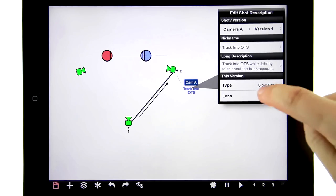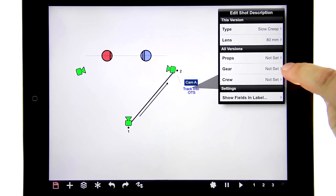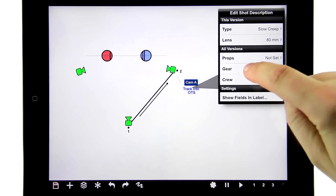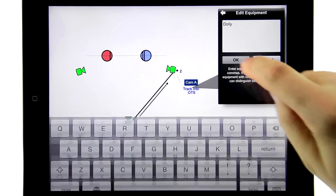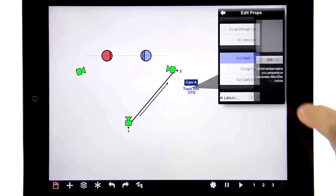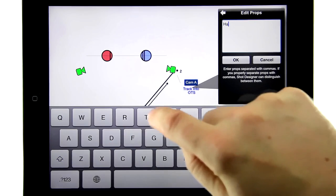But wait, there's more, because down here I also have props and gear and crew. So let's add gear—I'm going to make that a dolly, and the props I'm going to make that a hat.